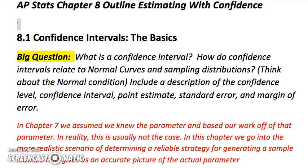Remember we learned about what a statistic was from the sample, and that we used that to measure the parameter from the population. In the last chapter we looked at knowing the parameter and basing our work off that. In reality, we're using the statistic to calculate the parameter most of the time. So we have to change some things, for example the normal condition, in order to do our calculations since we don't know the actual parameter — which in real life tends to be what happens.